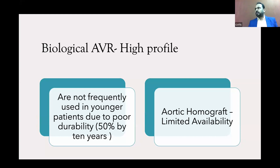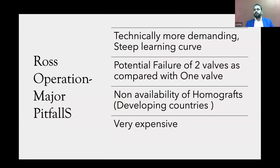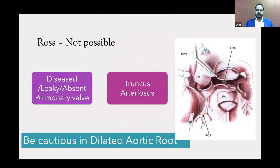Homograft calcification is a real problem — it is very bad when you do a redo on them. The Ross AVR has the advantage of growing autologous tissue; it restores the survival curve, and the only aortic valve option that nearly matches the normal survival curve is the Ross operation in the aortic position. It eliminates lifelong disadvantages of mechanical and xenograft valves. But it is technically demanding with a steep learning curve, converts a single-valve problem into a two-valve problem, and homograft is expensive and not freely available. Ross is not possible for everyone — not for those post-balloon pulmonary valvotomy, with leaky pulmonary vegetations, patients with truncus, or those with dilated aortic root, where Ross failure is very high.